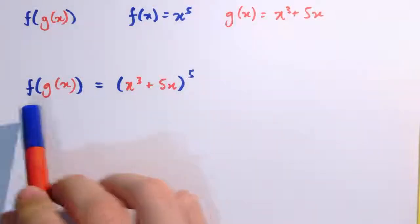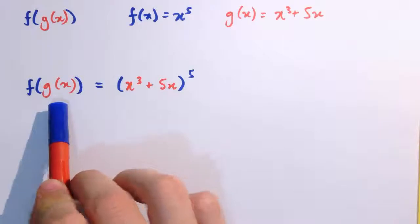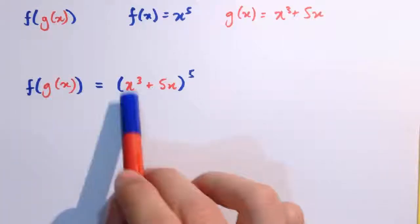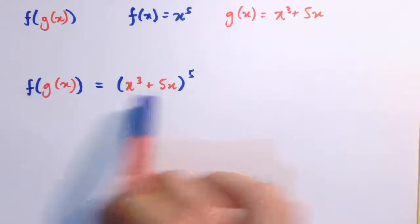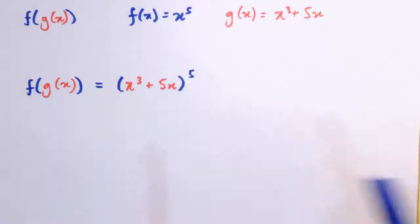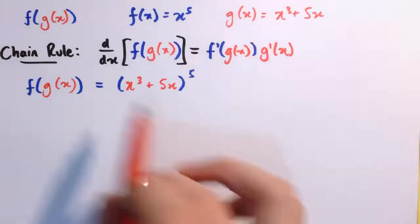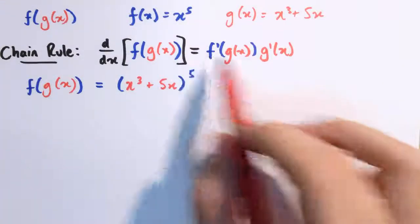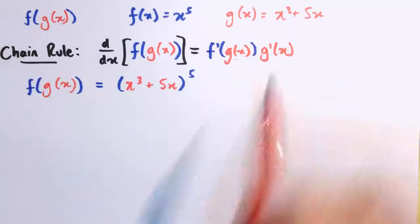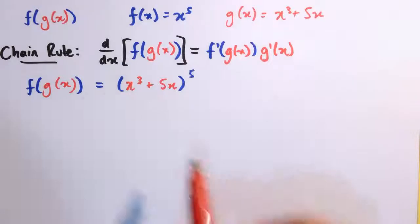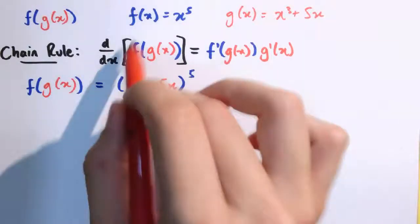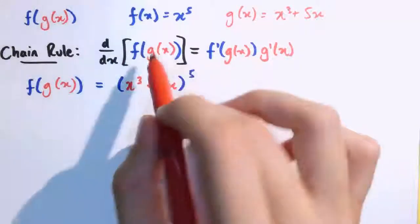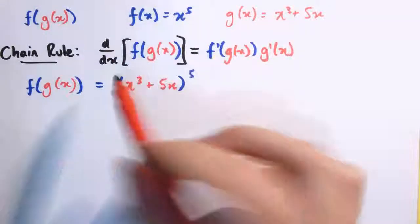When we compose those, applying g first and then f, we get x cubed plus 5x, and then we apply f and raise that whole thing to the power of 5. The chain rule says that d by dx of f of g of x is equal to f dash of g of x times g dash of x. Don't worry about the difference between square and curved brackets here — they're all the same.